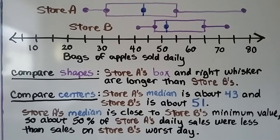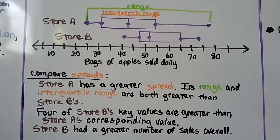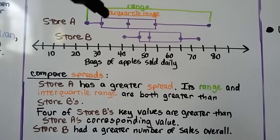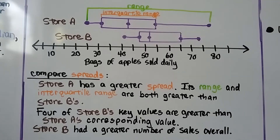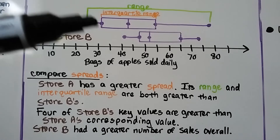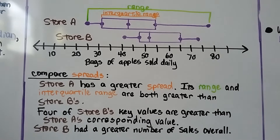About 50% of store A's daily sales were less than sales on store B's worst day. We can compare their spreads. Store A has a greater spread — its range and interquartile range are both greater than store B's. Remember, the interquartile range is the length of the box, and the range goes from the minimum to maximum value. We can see that A has a greater range than B, and its interquartile range is also greater than B.